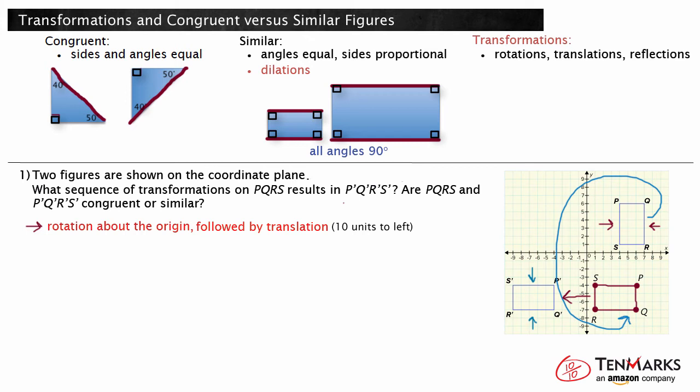The sequence of transformations was a rotation about the origin followed by a translation. Rotations and translations are rigid transformations. Therefore, figures P, Q, R, S and P', Q', R', S' are congruent. This is not the only sequence of transformations that could be used to change one congruent figure into the other.